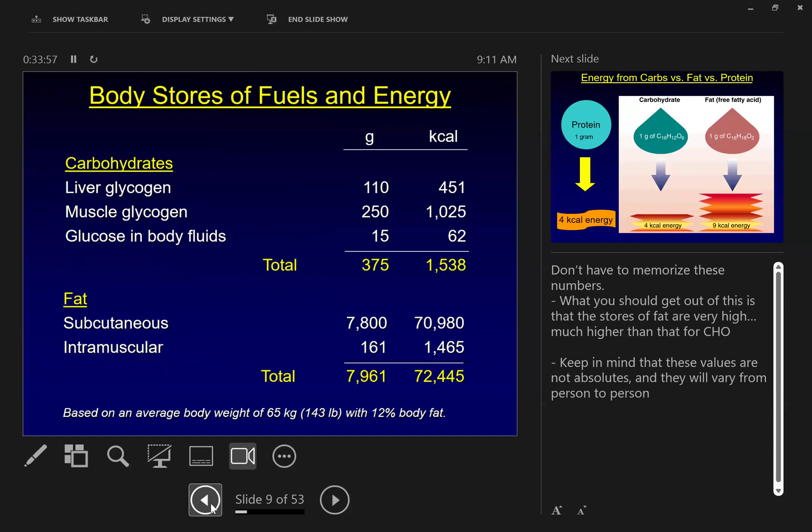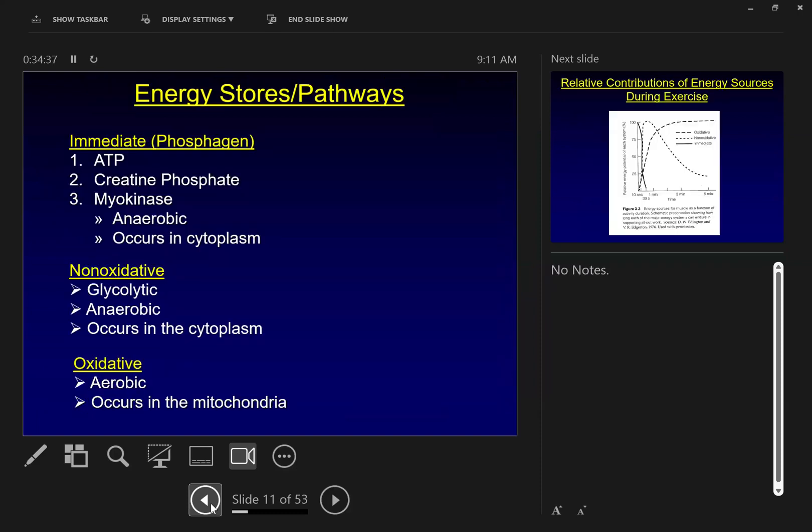Here's just fun with math. Stored carbohydrate in an average person, about 1,500 calories. So you've got about a day's worth of stored carbs. In a reasonably lean person, subcutaneous fat, like 72,000. About 71,000 in subcutaneous fat. Huge amounts. Because of this, you can go weeks without eating if you get water and still live. You will not be happy, but you can still live.